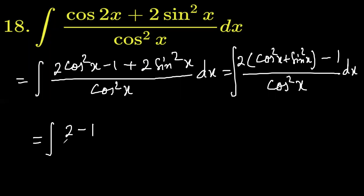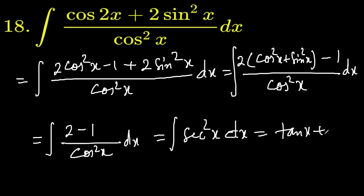1 divided by cos square x is sec square x, and integration of sec square x is tan x plus c. So your answer is tan x plus c.